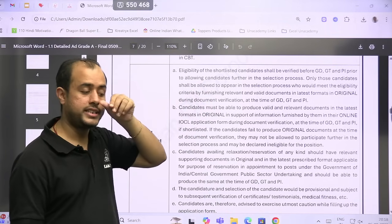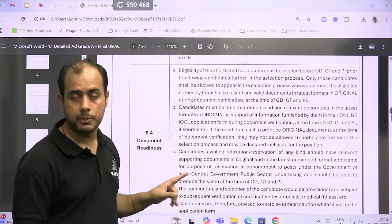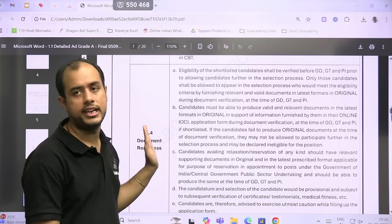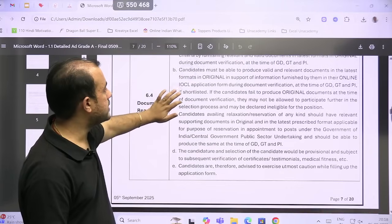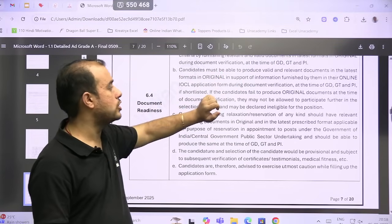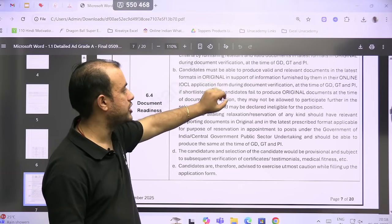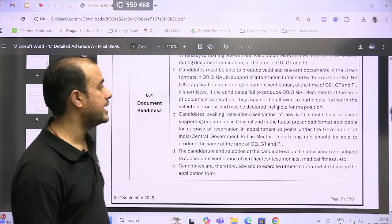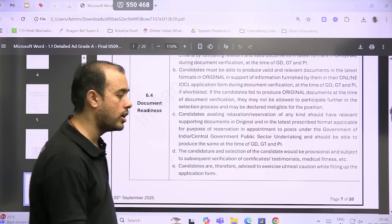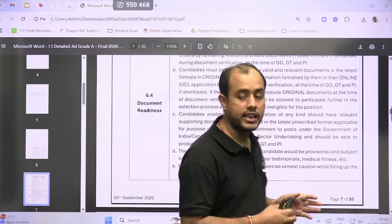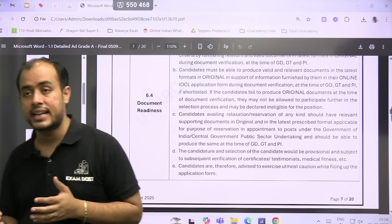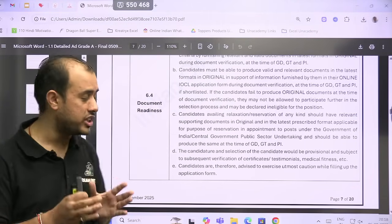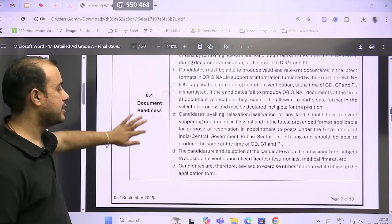Now, eligibility will be verified before GD, GT, PI. So before they call you for GD, GT, PI, they will check your uploaded documents and only if you are eligible will you be asked to appear for the selection process. So you must have original relevant documents in the latest format in original, in support of the information furnished in the online domain. So basically, whatever details you are filling in the application form online, for that you must have the original relevant documents.